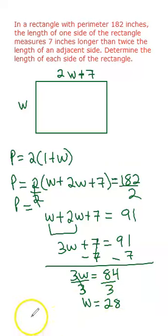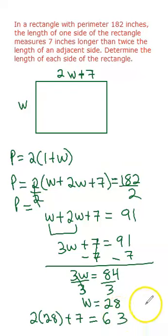So we need to know the other one: 2 times w which is 28 plus 7 is equal to 63. So we know that this side is equal to 63 and so is this side as well.